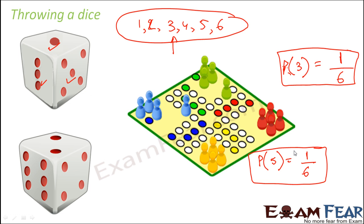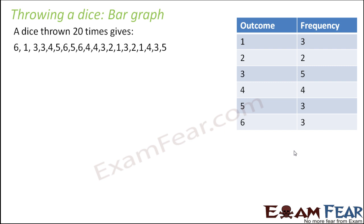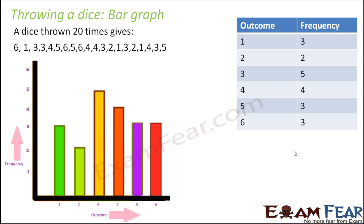So throwing a dice is another very common example of probability. If you throw a dice 20 times, it gives you a result like this — you get different numbers every time you throw it. If you draw its frequency table, this is how it looks. You can also plot a bar graph in the same way we did for tossing a coin. For example, outcome one has a frequency of three, outcome two has a frequency of two, and so on. That is how we drew the bar graph for throwing a dice.